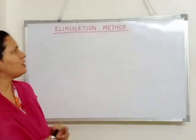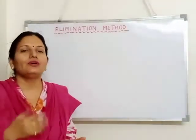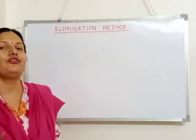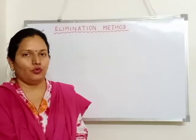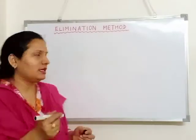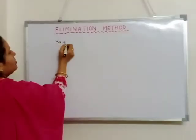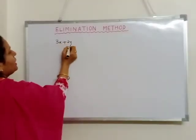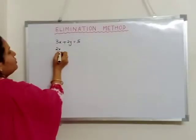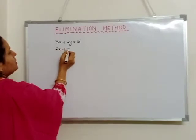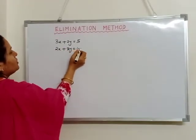Now next is the elimination method. In this method we have to eliminate or remove any variable, either x or y. Let us take an example: 3x plus 2y is equal to 5, and 2x plus 3y is equal to 10.